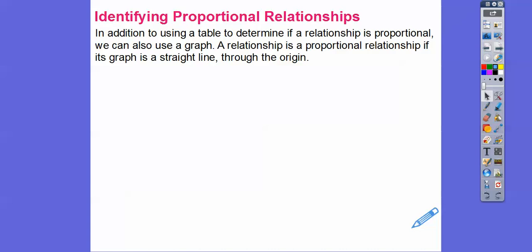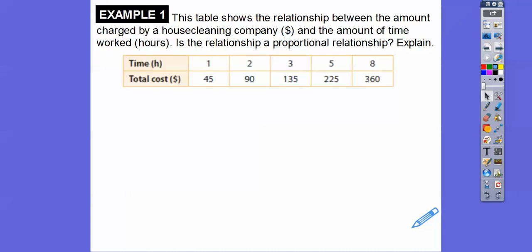Identifying proportional relationships — in addition to using a table, we can also use a graph. A relationship is proportional if the graph is a straight line and it goes through the origin. If one of those conditions isn't satisfied, then it's not proportional. When graphing, the top row of the table is the x-axis (horizontal), and the bottom row is the y-axis (vertical). Here, time in hours goes on the bottom axis, and cost goes up on the vertical axis.